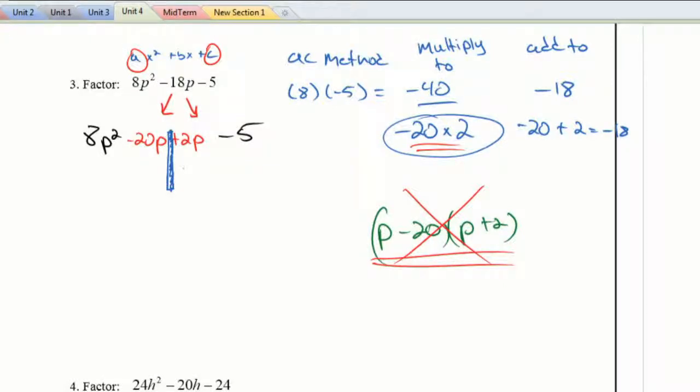So I ask, is there anything common between 8P squared minus 20P? Anything that's common there? The greatest common factor between 8P squared and 20P is going to be 4 and P. So if I pull out a 4P, what am I left with? Well, I have a 2P and then I have a minus 5.